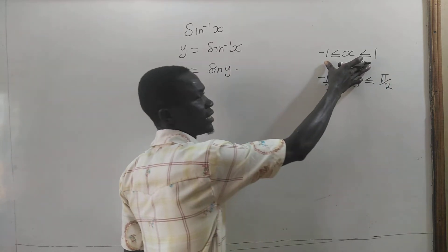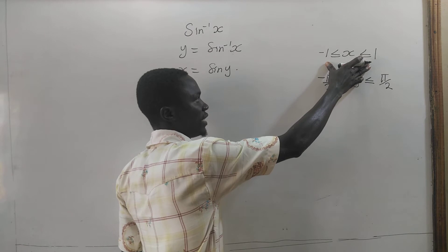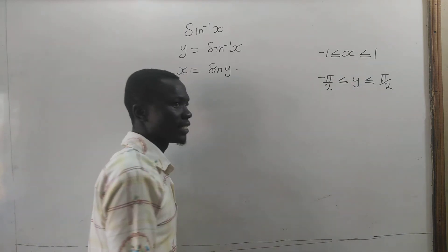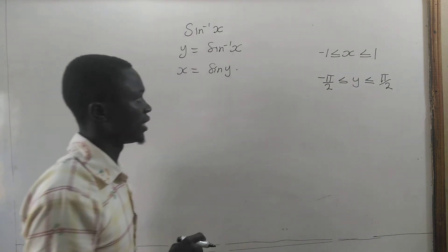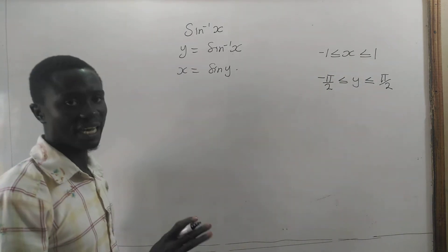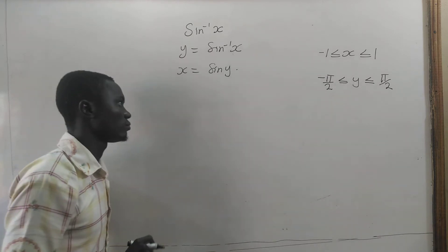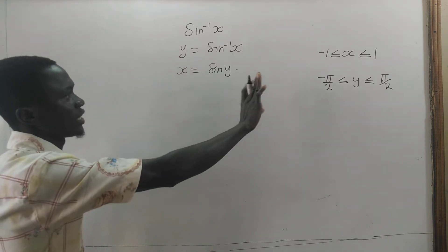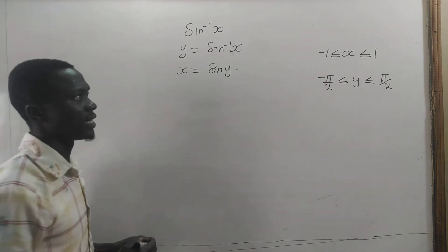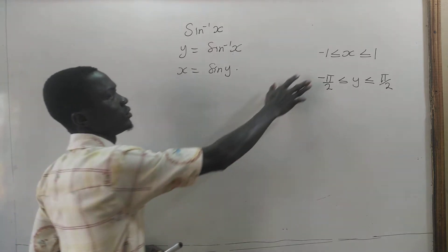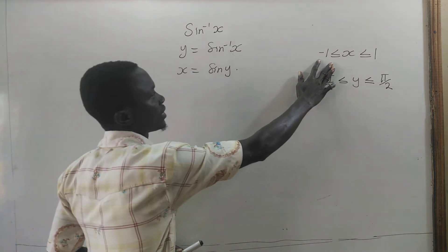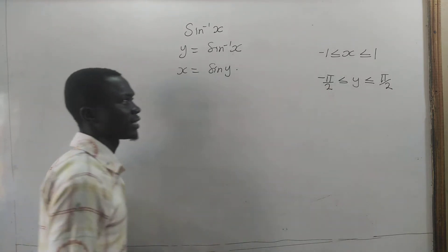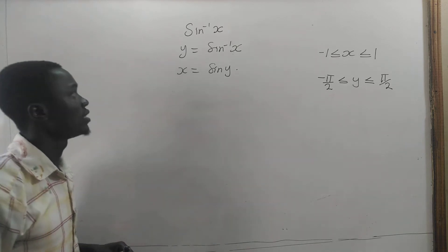So this is the domain of the inverse sine function and this is the range of the inverse sine function. If we restrict the domain of the sine function to this, and the range to this, we will get its inverse.